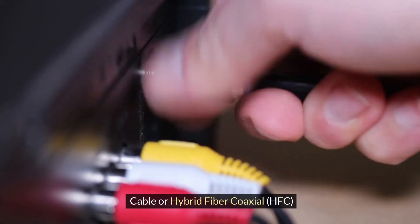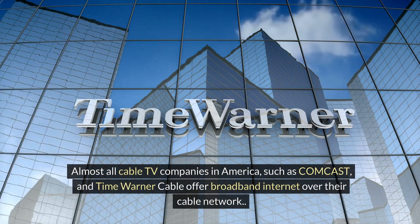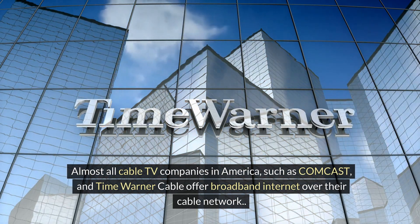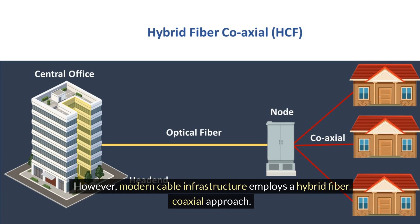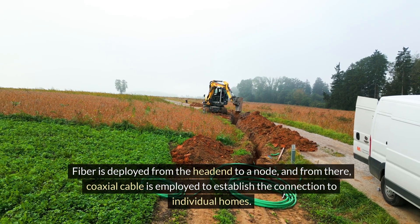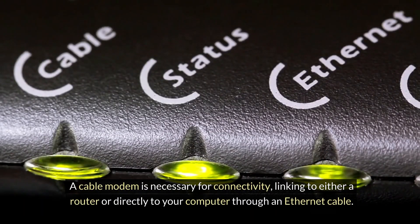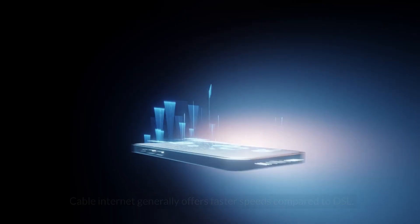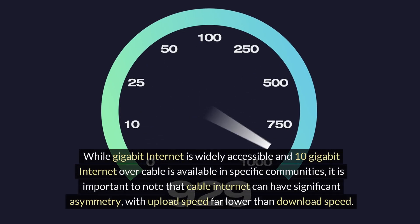Cable or Hybrid Fibre Coaxial (HFC): in cable broadband internet, internet is provisioned over the same network used for cable TV. Almost all cable TV companies in America, such as Comcast and Time Warner Cable, offer broadband internet over their cable network. Modern cable infrastructure employs a hybrid fibre coaxial approach — fibre is deployed from the headend to a node, and from there coaxial cable establishes the connection to individual homes. A cable modem is necessary, linking to either a router or directly to your computer. Cable internet generally offers faster speeds than DSL; gigabit internet is widely accessible, and 10 gigabit internet is available in specific communities. It is important to note that cable internet can have significant asymmetry, with upload speed far lower than download speed.